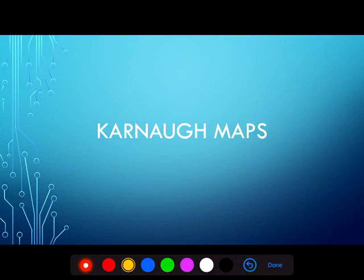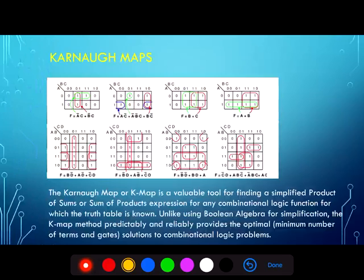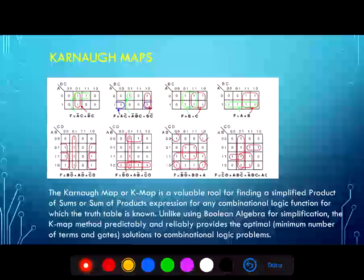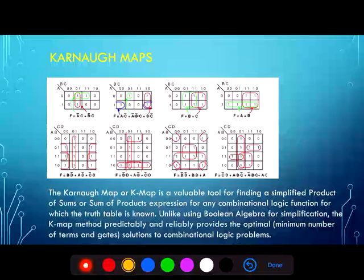Hello and welcome to our session on Karnaugh Maps. K-Maps are a valuable visual aid and tool for finding a simplified product of sums or sum of products expression for any logic function that can be expressed via a truth table. Unlike using Boolean algebra for simplification, the K-Map technique is simple, fast, and predictably and reliably provides the best or minimum number of transistors and gate solutions to combinational logic problems.